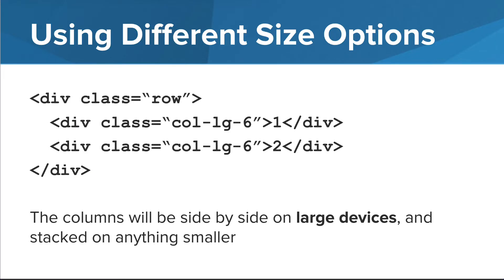When defining the breakpoint class, we can specify how many columns the div will take up for a specific device size. In this example, we have two divs that, for large devices and up, will each take up 6 columns. Because there are 12 columns in all, these divs will appear side by side. We don't specify the column size for devices smaller than the large breakpoint, so on medium, small, and extra small devices, these divs will appear stacked, each taking up 12 columns.